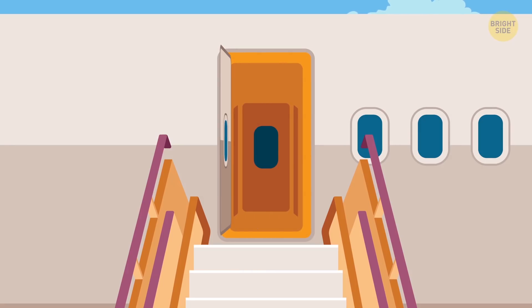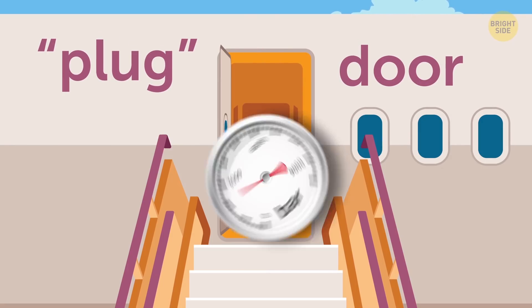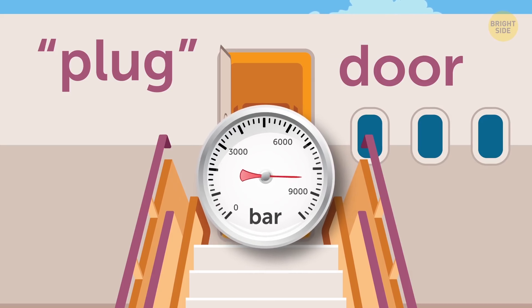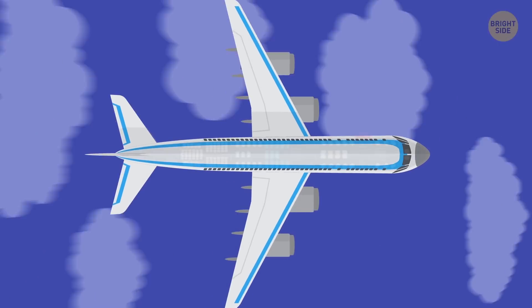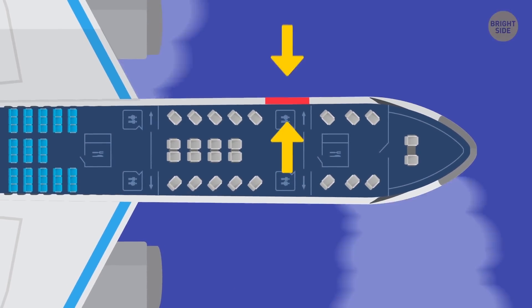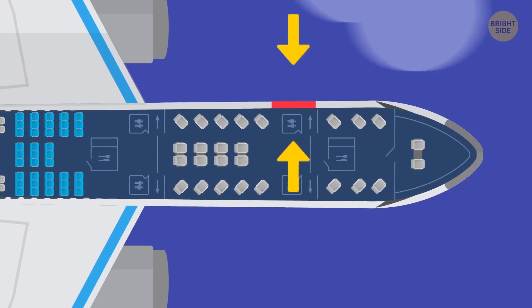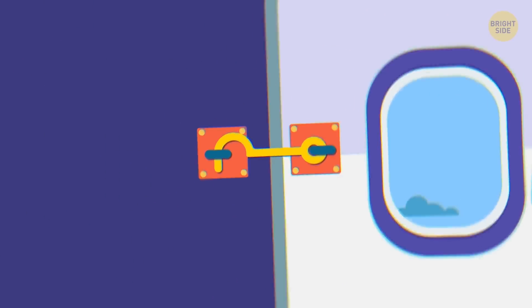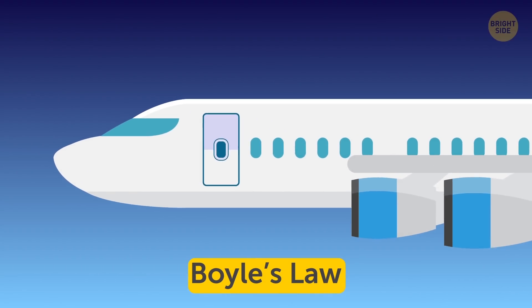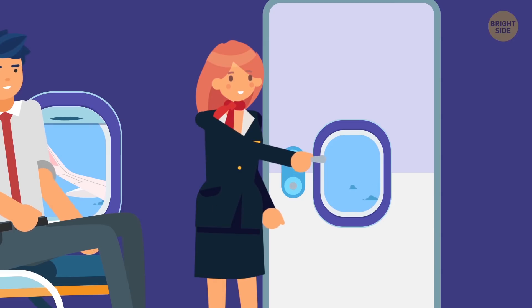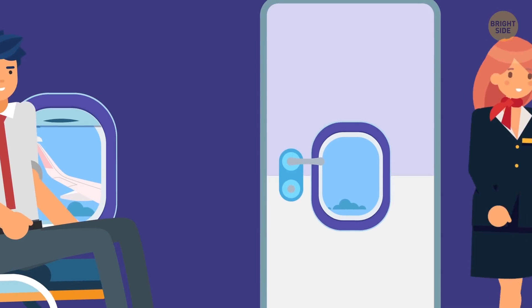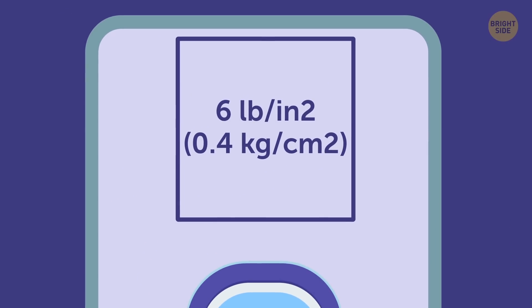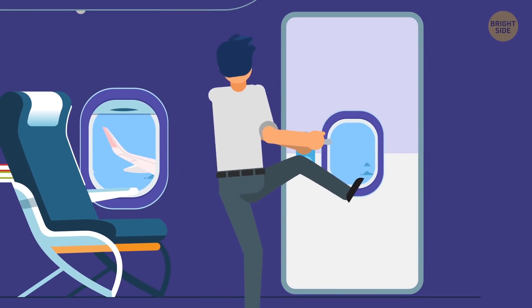Another question connected with the doors on jumbo jets is: why do they always open inward? It's called a plug door. That means the door seals itself thanks to the pressure difference on its two sides. The pressure inside the plane is much higher than it is outside — this pressure literally forces the door in its socket and prevents it from opening until the pressure becomes equal. Instead of relying on the door's lock, with plug doors you take advantage of Boyle's Law, which explains how pressure and gases are related. That's why it's impossible for a person to open a pressurized airplane door mid-flight. Each square inch of this door feels the pressure of 6 pounds of weight, so to open it you'd have to pull with a force of 1,000 pounds — no human is powerful enough to perform such a feat of strength.